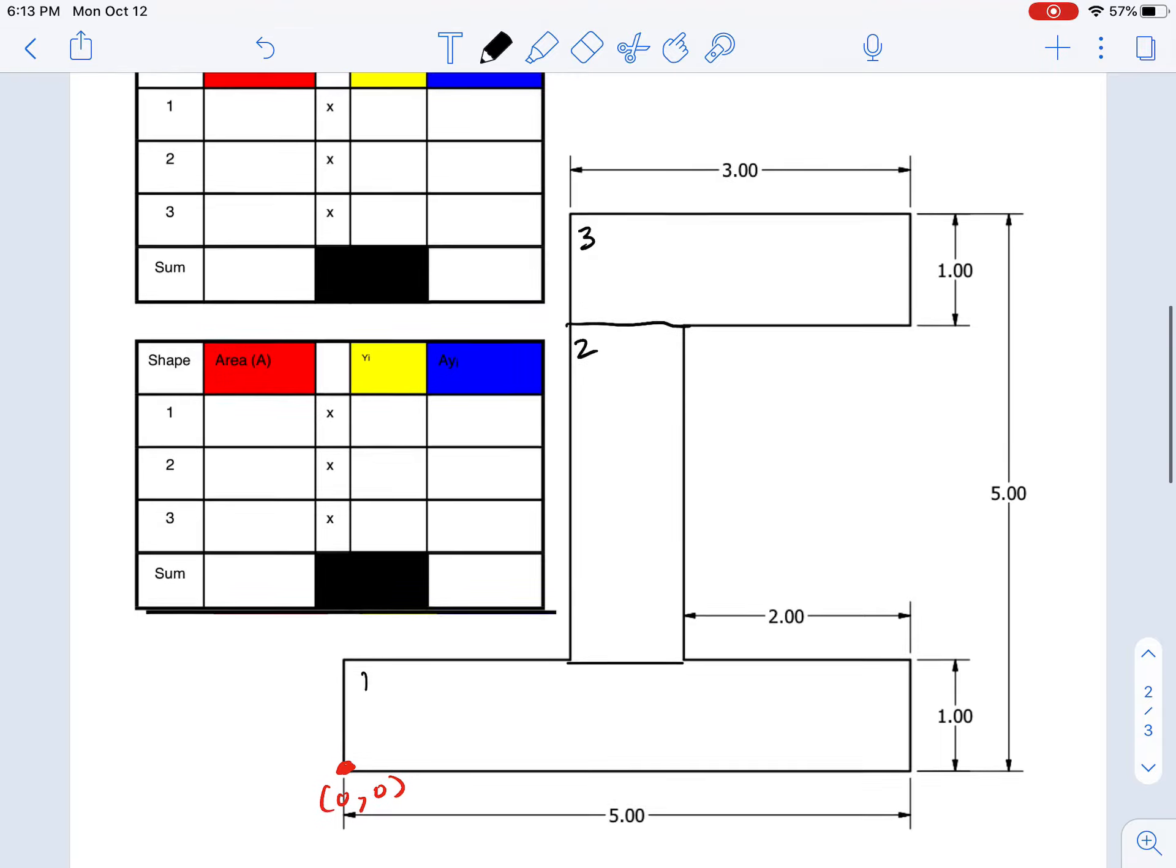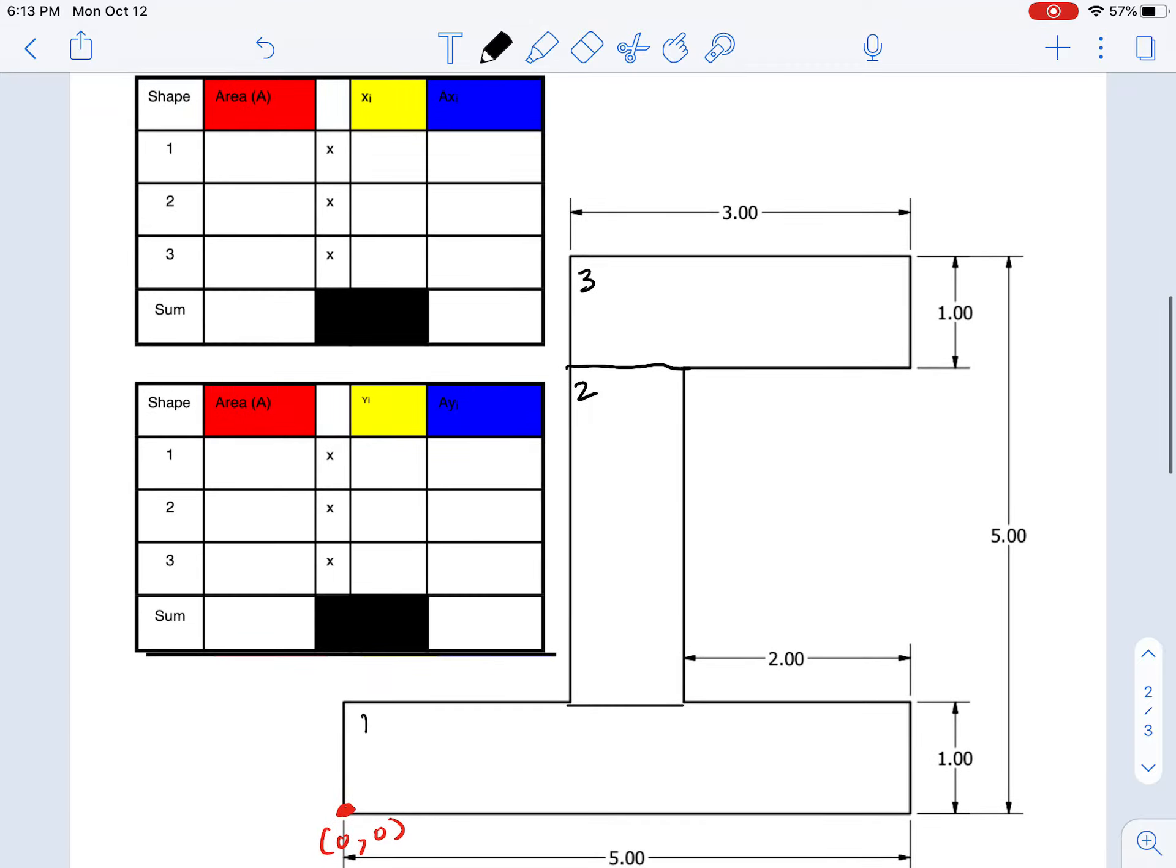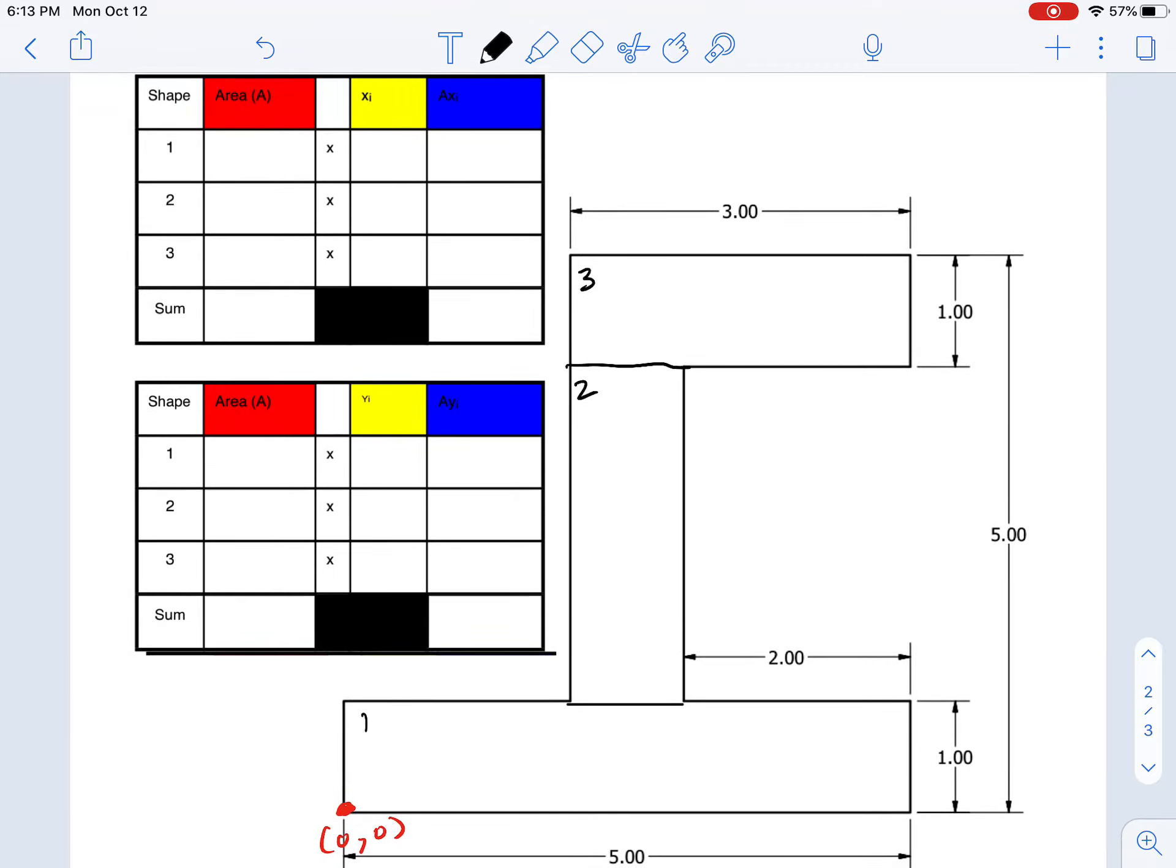So let's find the centroids of each individual shape, and then we're going to do a weighted average of those shapes. First, let's get the areas. The area for shape one is pretty simple, it's just 5 by 1, so this is 5 square inches.